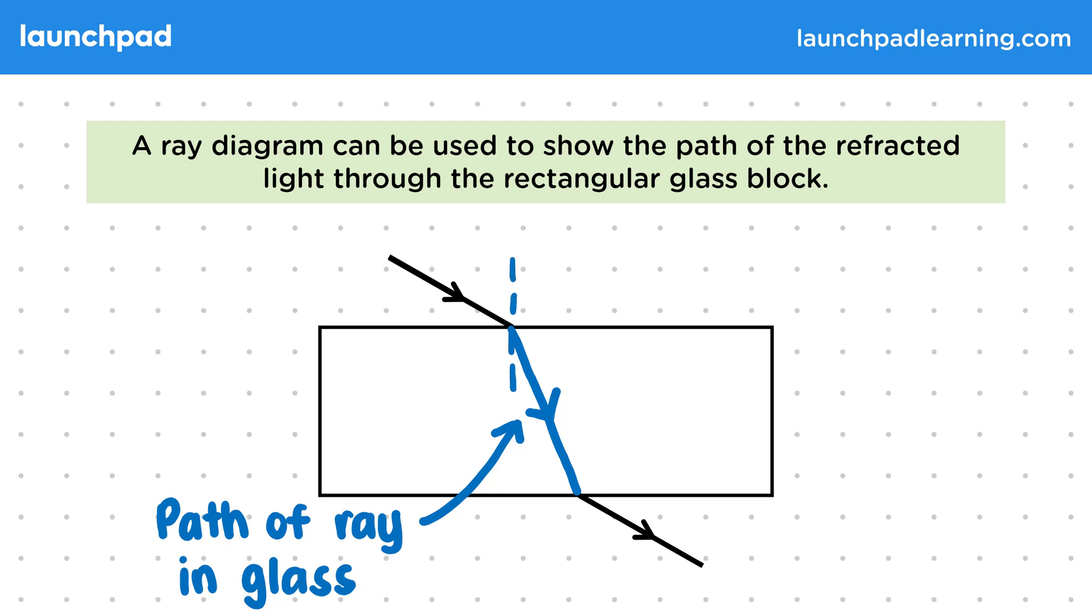To do this we should draw the normal to the glass at the point the ray enters it. This is the line that's perpendicular to the boundary. As we can see, the ray is closer to this line after entering the glass. We can describe this as the ray bending towards the normal.